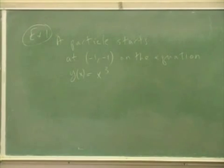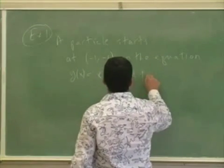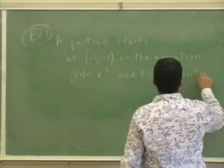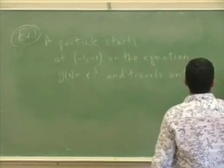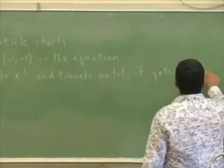A particle starts at (-1, -1) on the equation y(x) = x³ and travels until it gets to the point (2, 8).